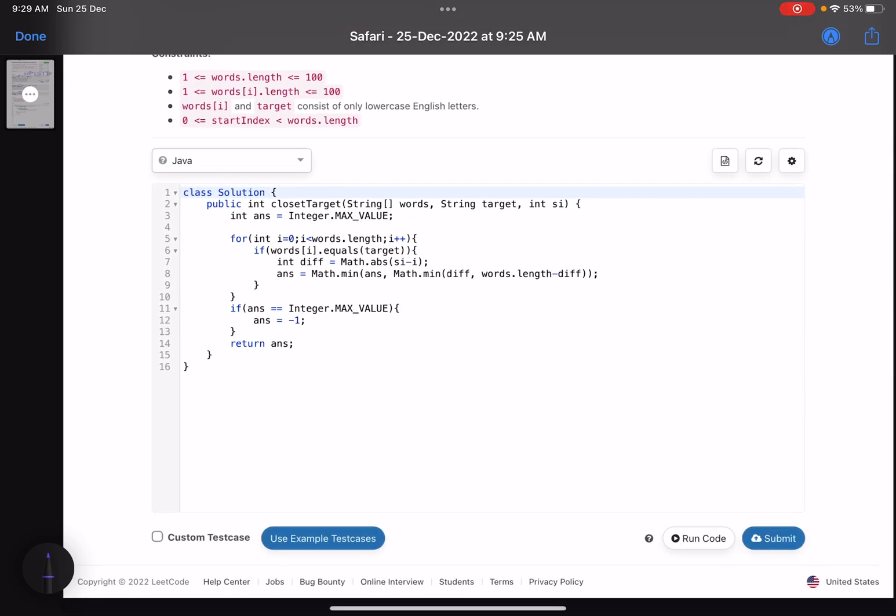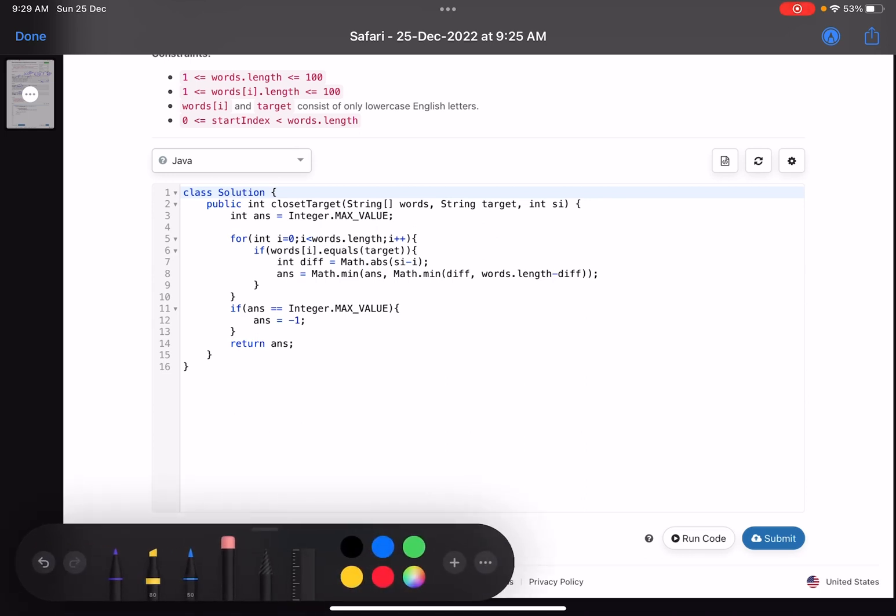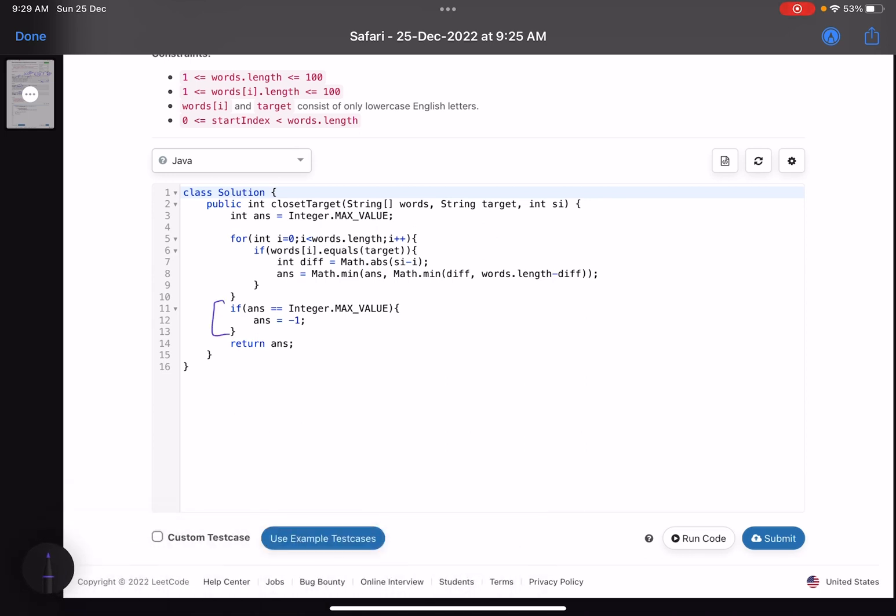These are the things asked in the question. Let's look into the code. It's an implementation based problem, nothing fancy is needed. I'll jump into the explanation and while showing the code I'll explain things. Answer equals to max value because I've initialized it so that if at the end my answer is max value, I make it minus one.